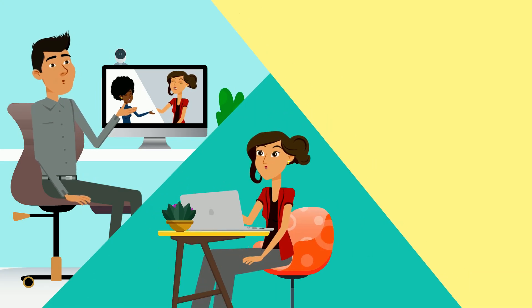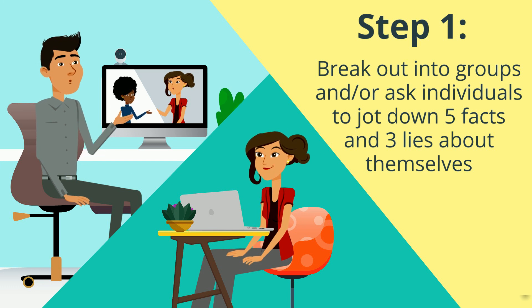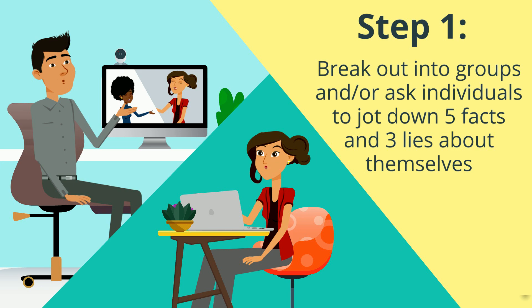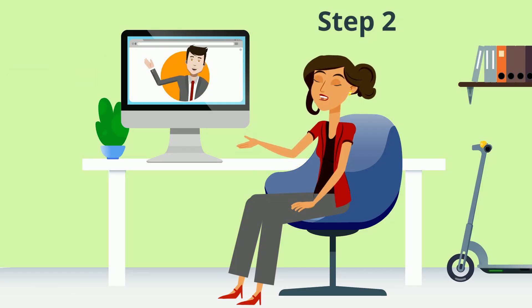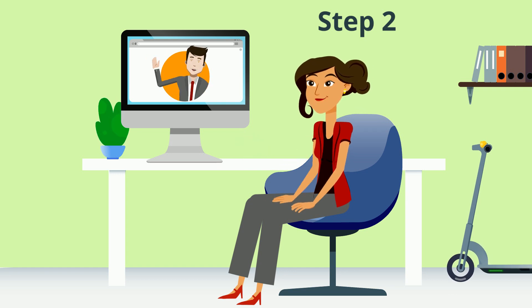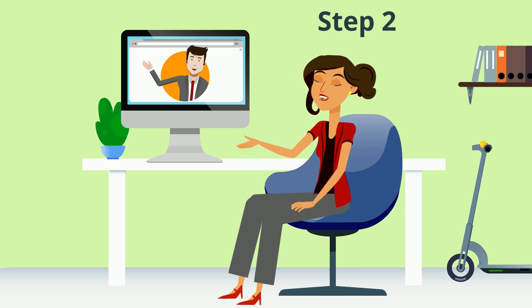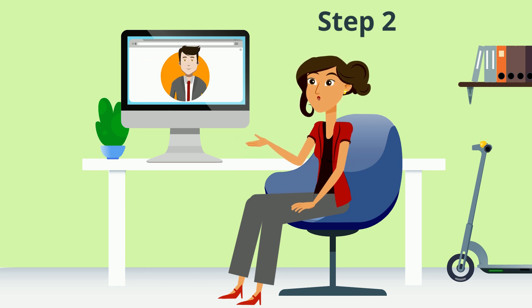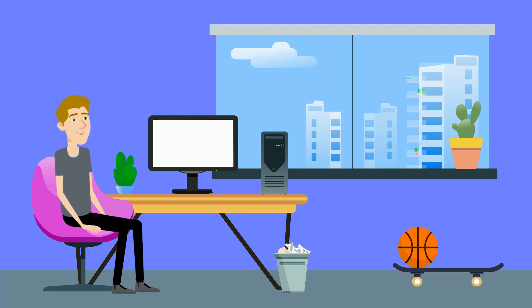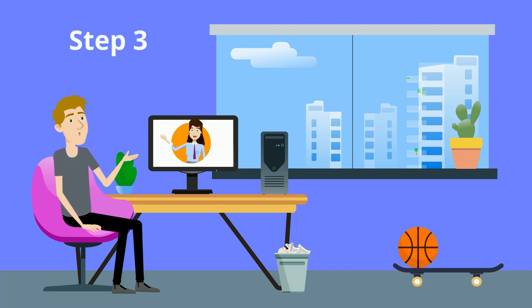Step one: break out into groups and or ask individuals to jot down two truths and one lie about themselves. You can do this by breaking into smaller groups or just having a large group session where you select one person or multiple people to share. You can ask the groups to call out the information as it comes out or have group members type it in chat.